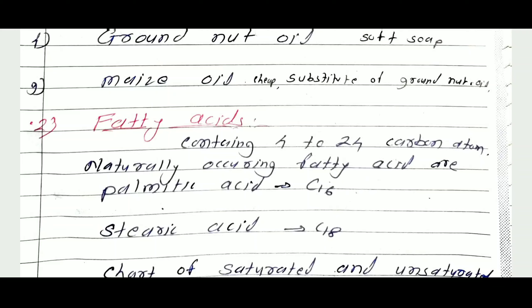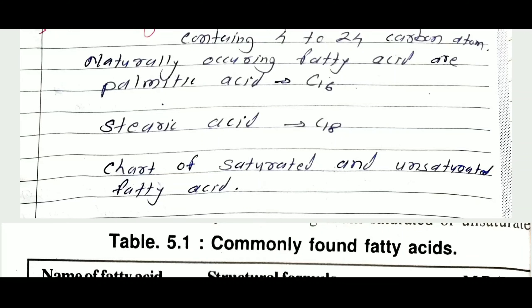Another major raw material for manufacture of soap is the fatty acid. Fatty acids are organic carboxylic acids containing four to twenty-four carbon atoms. Naturally occurring fatty acids contain an even number of carbon atoms — for example C16 and C18. An example of a C16 fatty acid is palmitic acid, and a C18 fatty acid is stearic acid. These acids can be saturated or unsaturated.